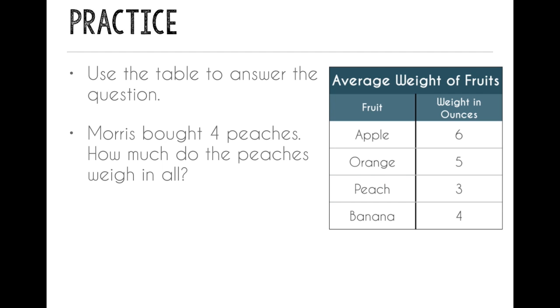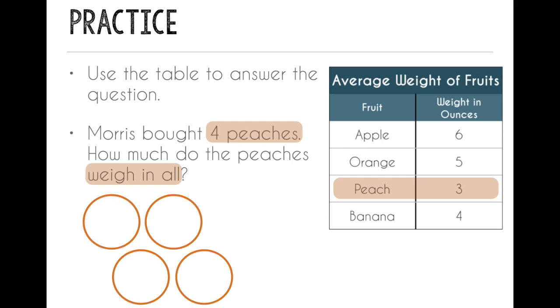Let's try another example. This time we're going to use the table to answer the question. Morris bought four peaches. How much do the peaches weigh in all? So I see that he bought four peaches, and I want to know about how much the peaches weigh. In all tells me I want the total weight of all four peaches. So I'm going to look at my table and find that the peaches weigh three ounces each. So I'm going to draw equal groups. I have four peaches, so I'm going to draw four groups. And I know that each peach weighs three ounces. So what should go inside each group? Three. I want to put three inside each group. So now I have four groups of three.